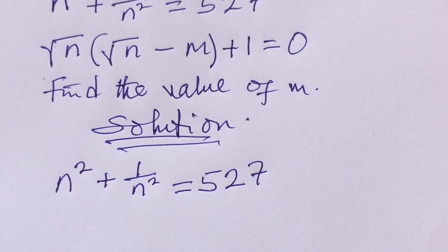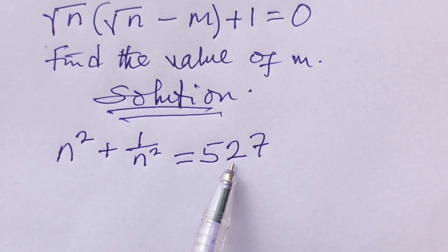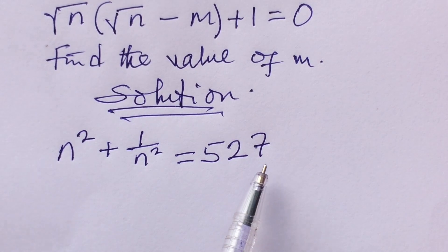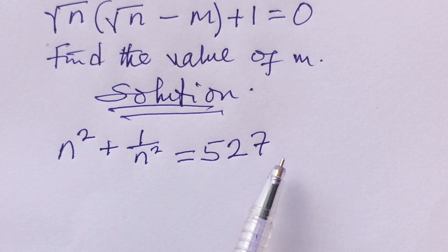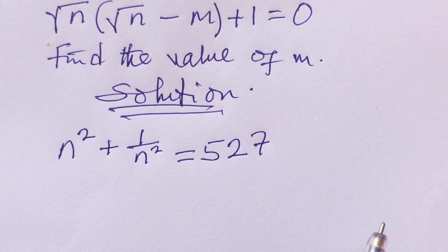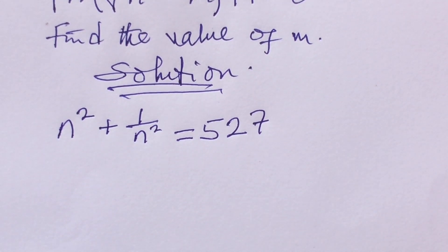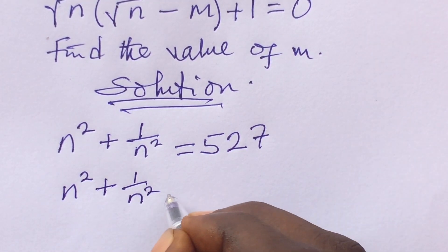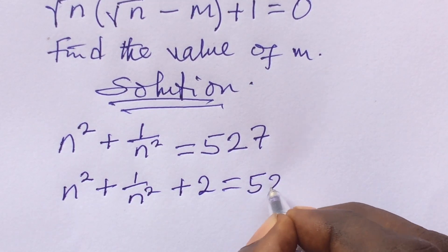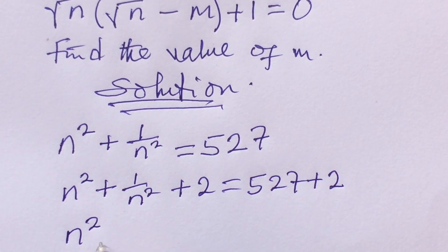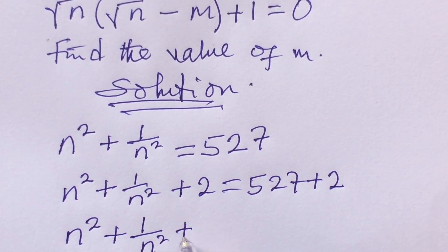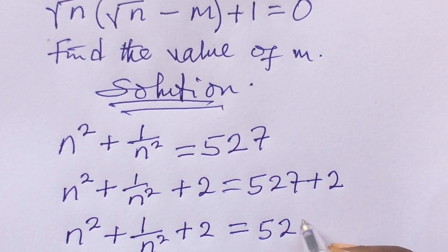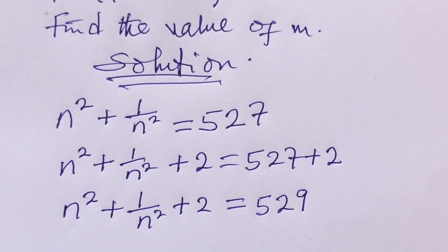Now, the right-hand side is not a perfect square. We need to make it one. If we add 2, we get 529, which is a perfect square. So we add 2 to both sides of the equation. This gives us: n² + 1 all over n² + 2 = 529.